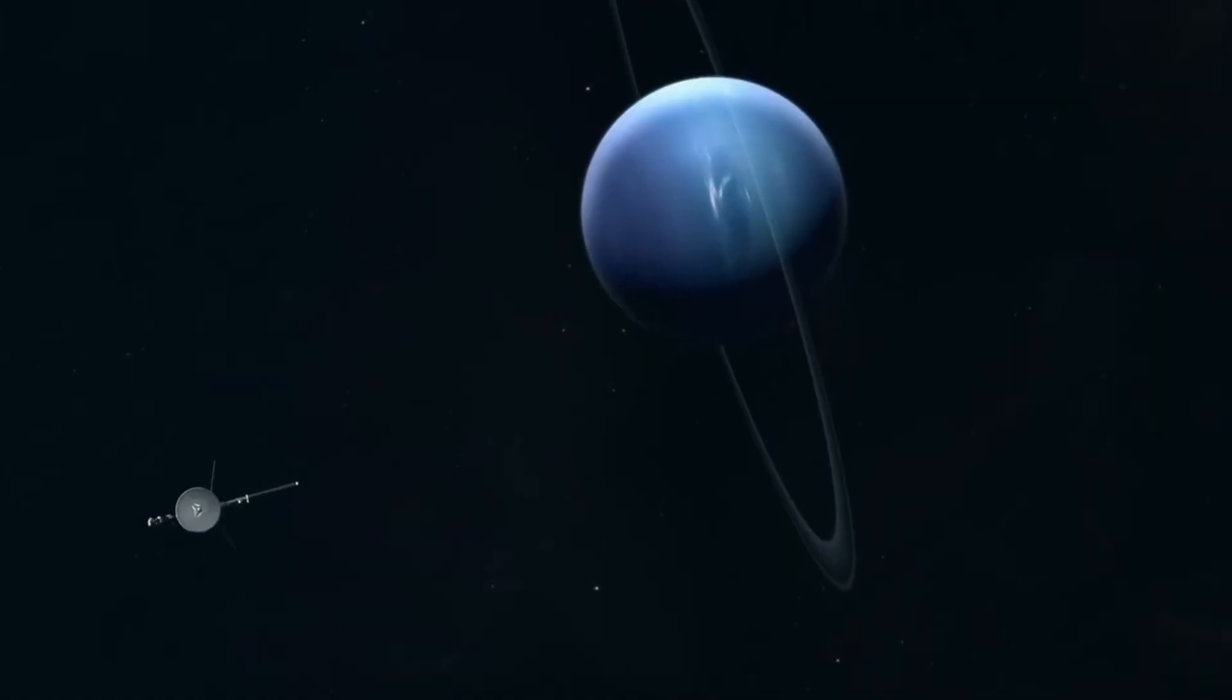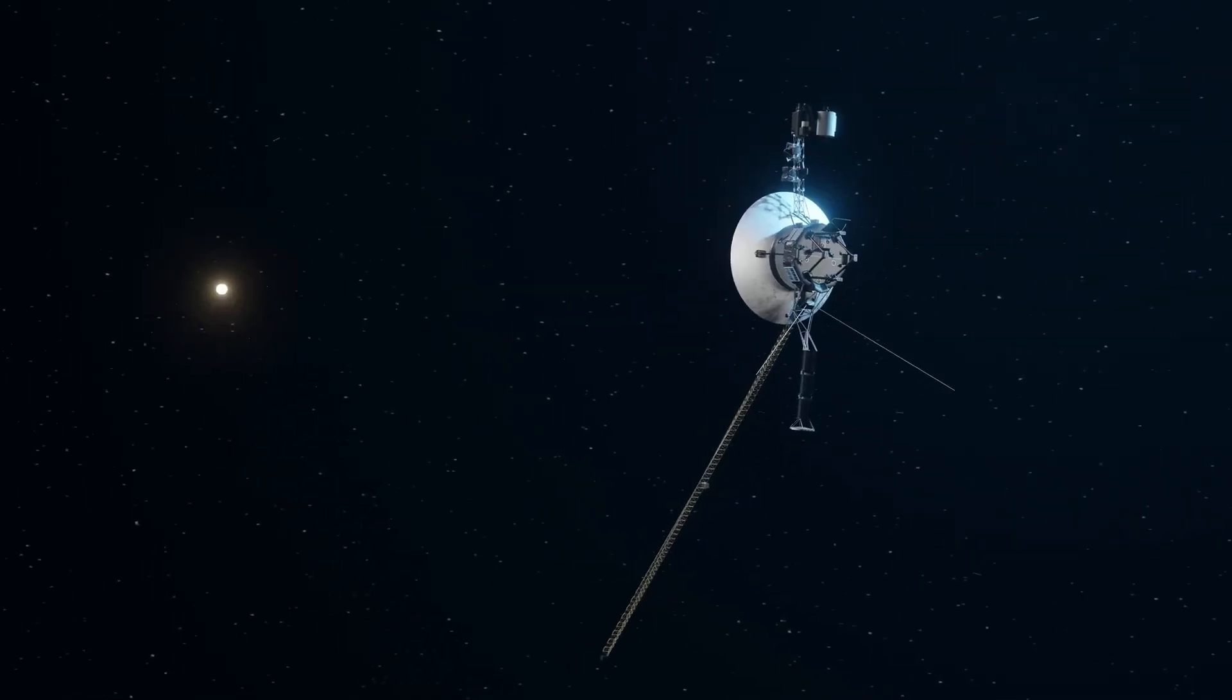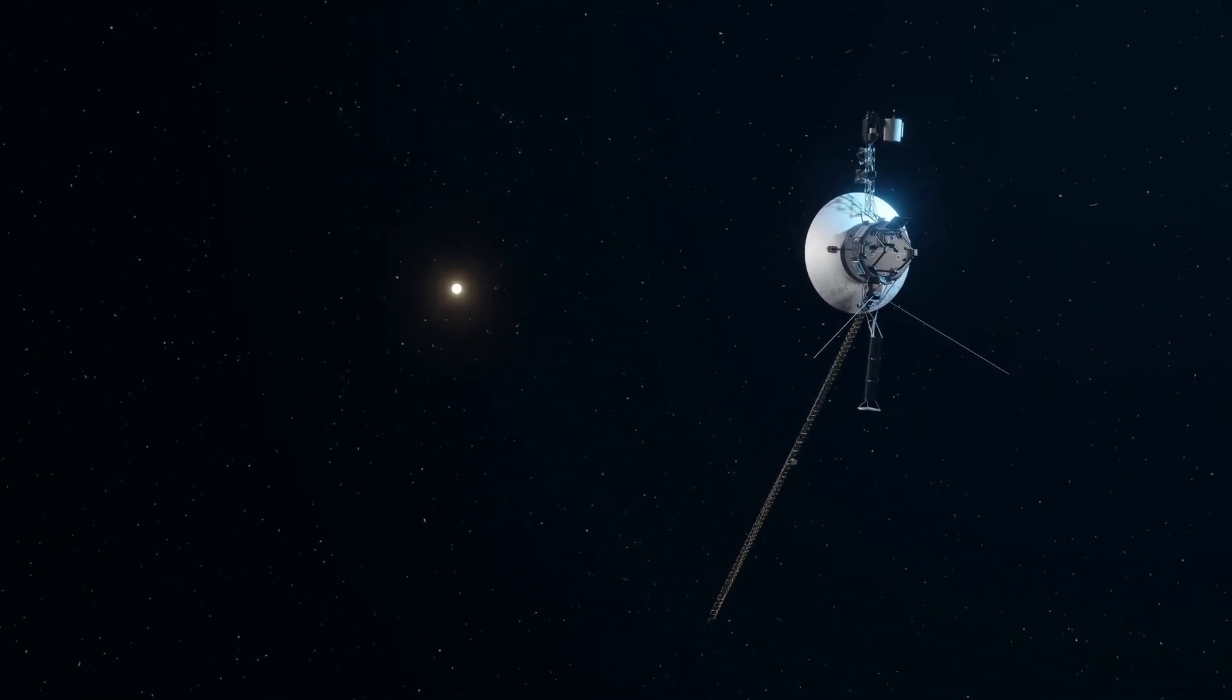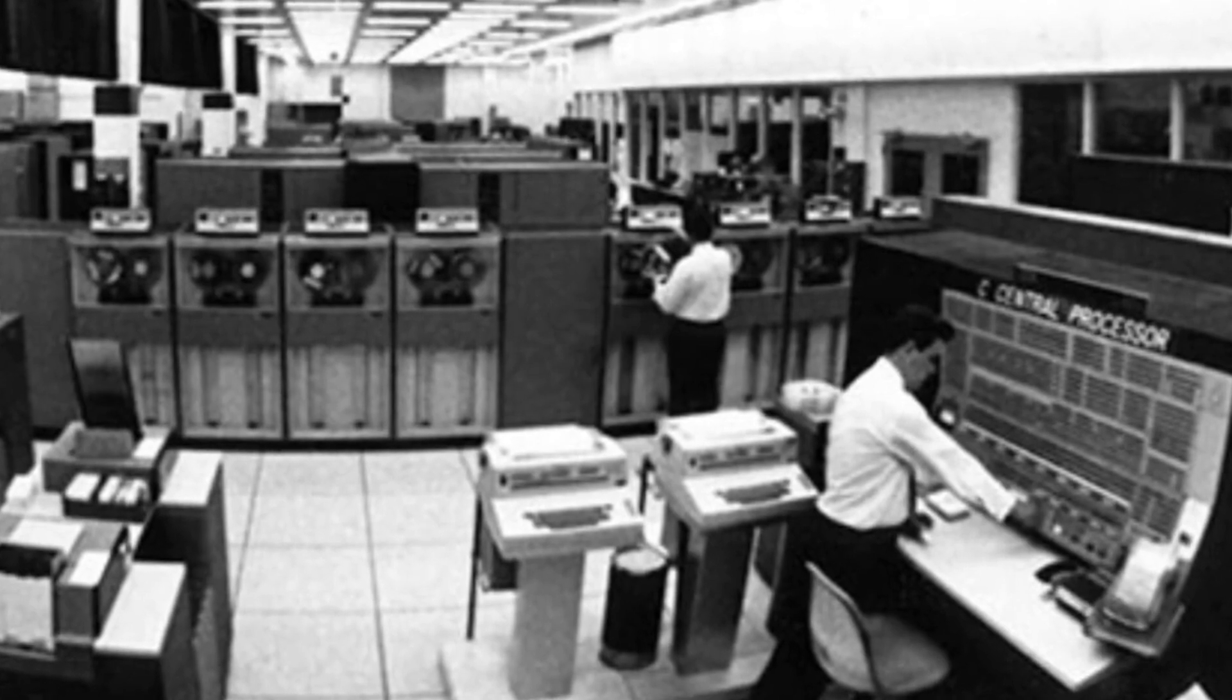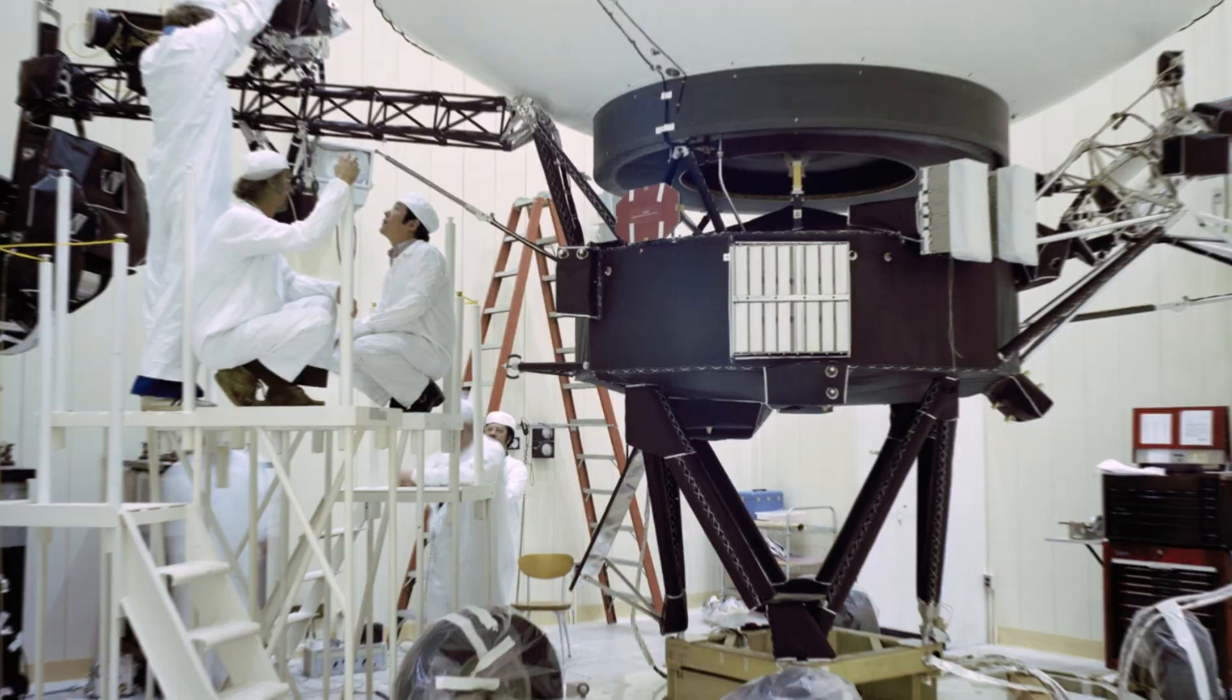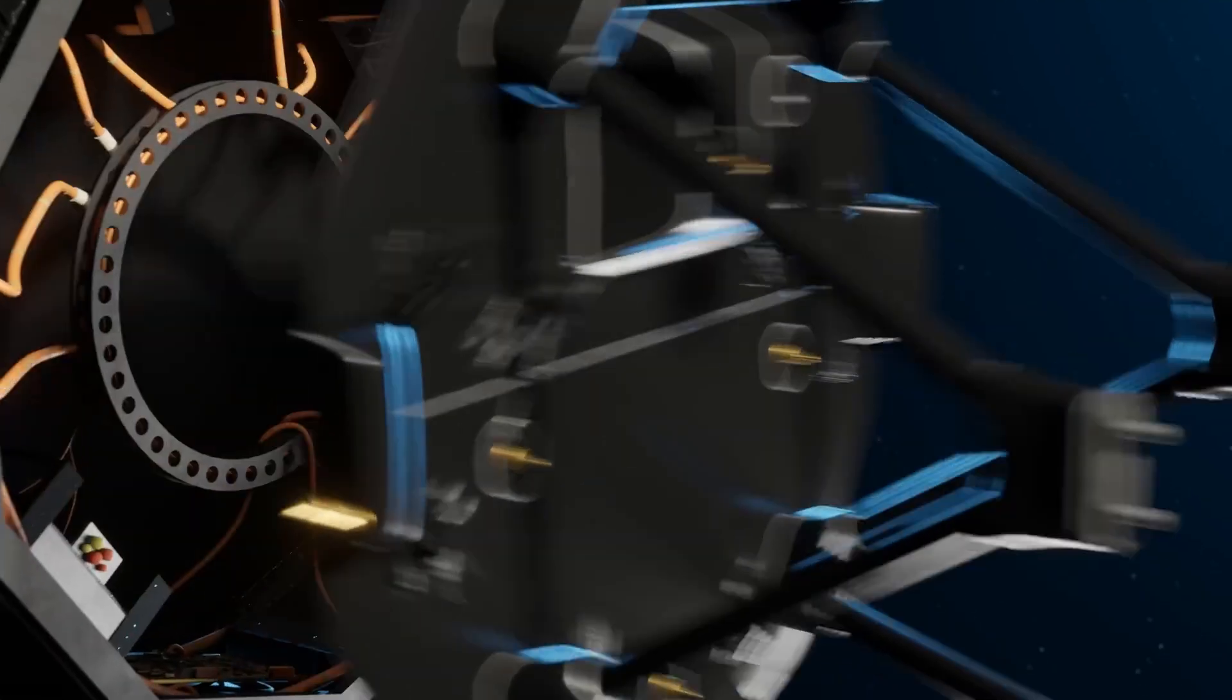The sheer distance involved presents an astronomical challenge. Signals traveling from Earth to Voyager 1 take approximately 21 hours to traverse the vast expanse of space. This means that every command or update sent to Voyager requires meticulous planning and patience from the mission team. Engineers must carefully schedule the transmission to coincide with favorable conditions, ensuring that Voyager receives and executes the instructions flawlessly.